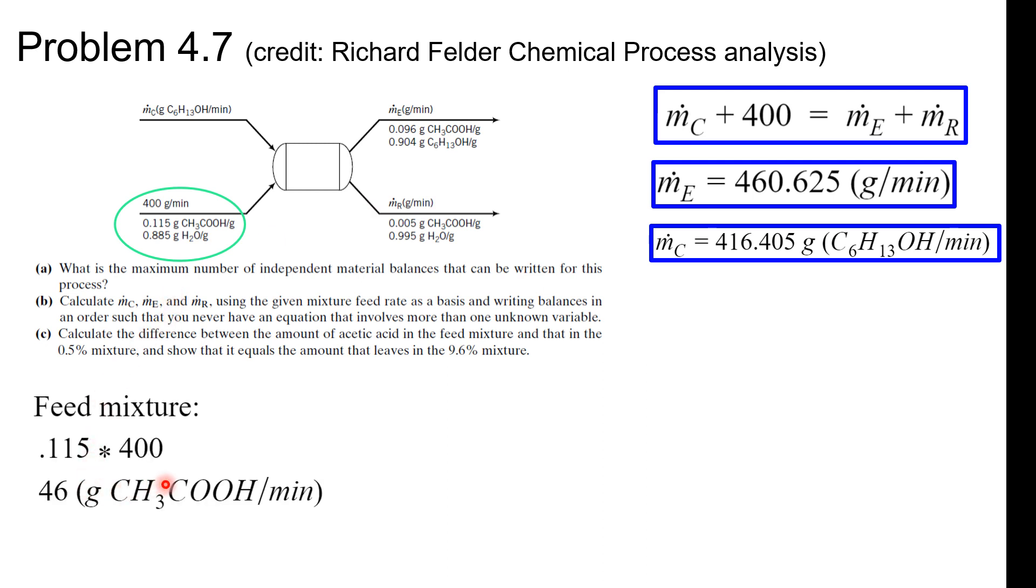So in the feed mixture multiply it, we get 46 grams per minute. What about the output mixture? Oh, so we multiply. Careful with this 0.005, right? It's not gonna be 0.5 or something like that. 0.005 because it's a percentage. And look, hey, I didn't show you m_R but can you calculate it? I think so, because look m_E and m_C, plug it in, you can solve for m_R. You get about 356.